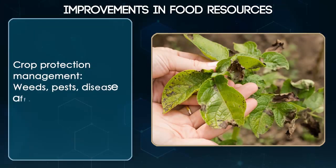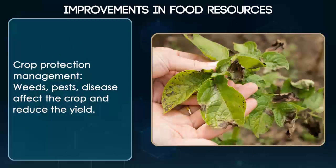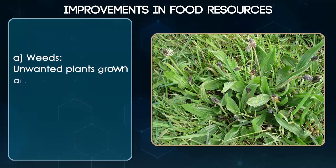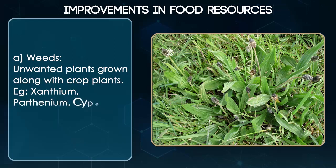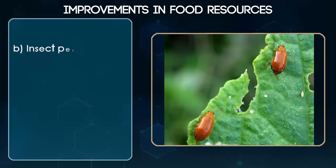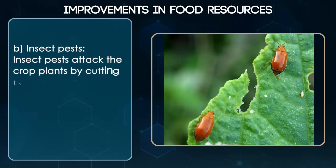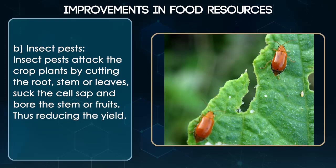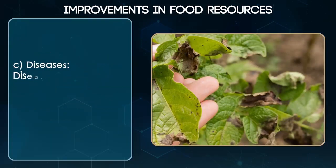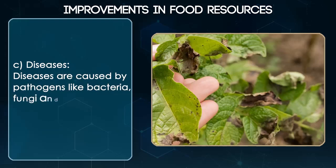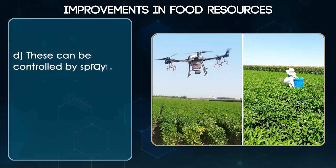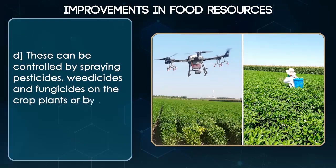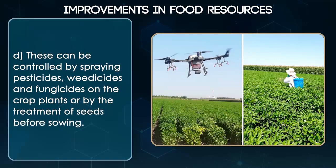Crop Protection Management: Weeds, pests and diseases affect the crop and reduce the yield. A. Weeds — unwanted plants that grow along with crop plants, for example Xanthium, Parthenium, Cyperus rotundus. B. Insect pests — attack the crop plants by cutting the root, stem or leaves, suck the cell sap and bore the stem or fruit, thus reducing the yield. C. Diseases — caused by pathogens like bacteria, fungi and virus. These can be controlled by spraying pesticides, weedicides and fungicides on the crop plants or by the treatment of seeds before sowing.